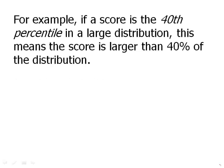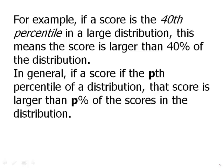If a score is in the 40th percentile in a large distribution, this means the score is larger than 40% of the distribution. It is larger than 40% of the scores. And, in general, that pattern holds. I'll state it in terms of a variable. If a score is the pth percentile of a distribution, that score is larger than p% of the scores in the distribution. And, of course, p could be anything between 1 and 100.